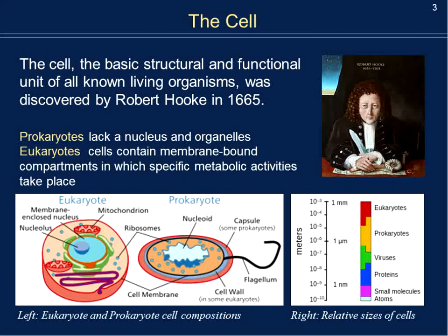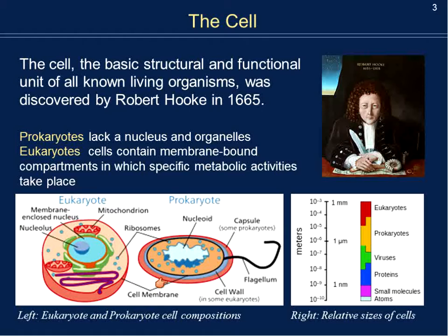We're going to go back and do a little bit of biology. The cell is what's considered the basic structural unit for all living organisms, discovered by Robert Hooke in 1665. The two types of structural cells I'd like to look at are the prokaryote and the eukaryote. The prokaryote is a very basic organism because it lacks both the nucleus and organized cell structure — it lacks organelles. A prokaryote is essentially just a cell membrane with a general area called the nucleoid, and everything within the cell performs all of the functions — they're not designated functions.